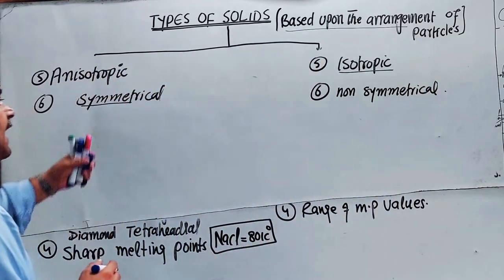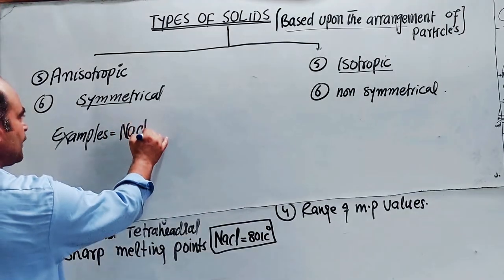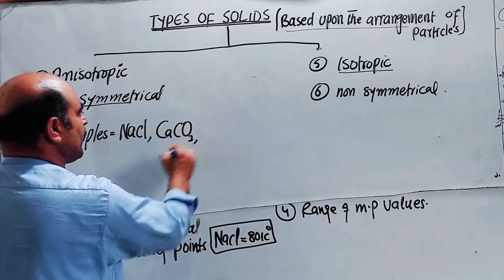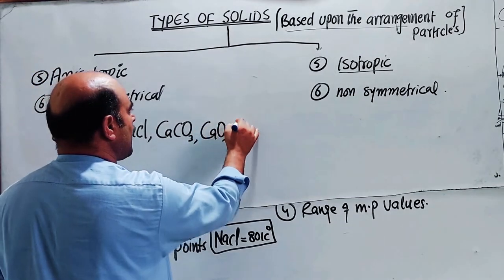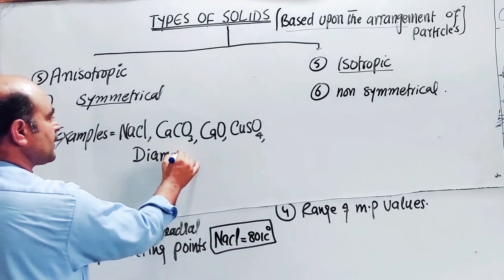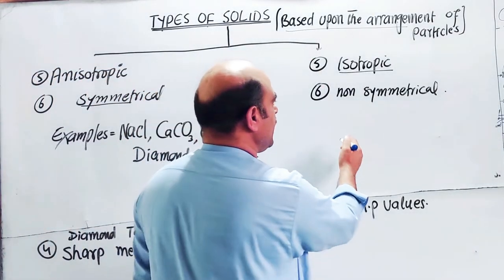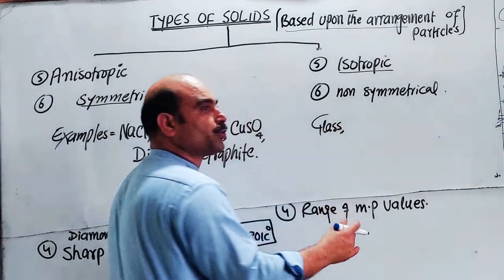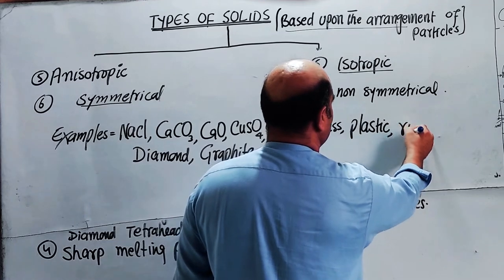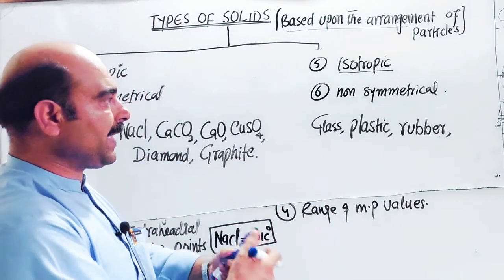Examples of crystalline solids: sodium chloride (cubic shape), calcium carbonate, calcium oxide, copper sulphate (CuSO4), diamond (tetrahedral shape), and graphite (hexagonal shape). Examples of amorphous solids: glass (a super cooled liquid), plastic, rubber — these materials have no regular arrangement of particles and are therefore called super cooled liquids or pseudo solids.